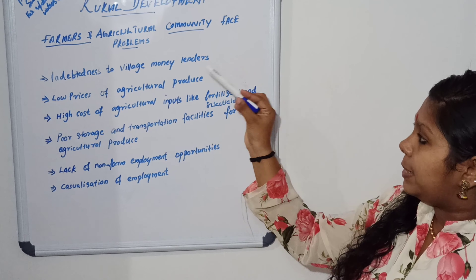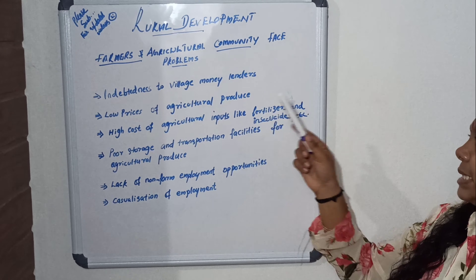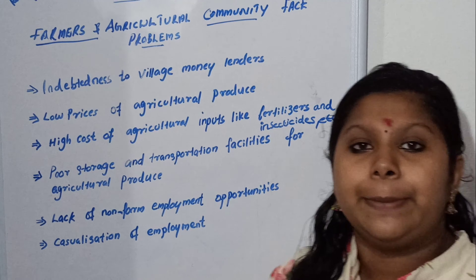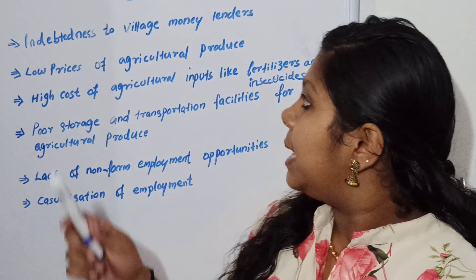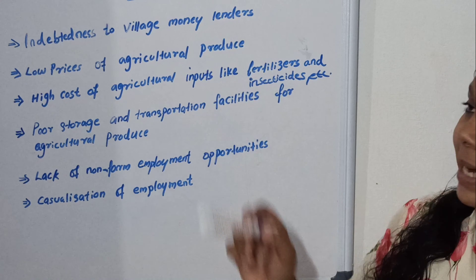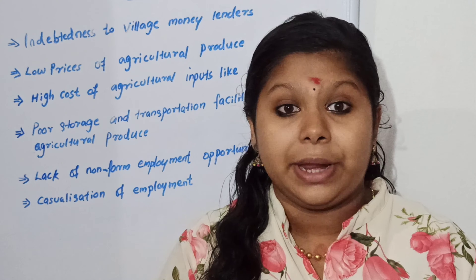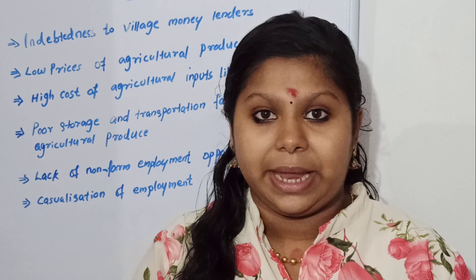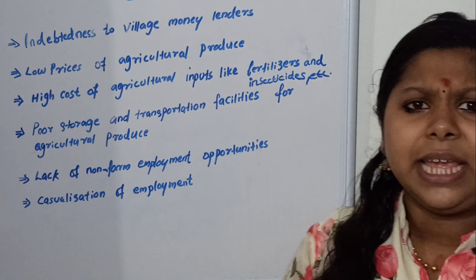We can look at each point one by one. First, dependence on village money lenders. During the pre-independence days, our farmers faced a lot of problems due to the exploitation by the British. Then the farmers took a lot of money from money lenders, and the money lenders charged a lot of interest. This is what is meant by dependence on village money lenders.